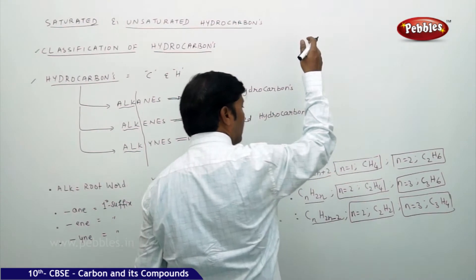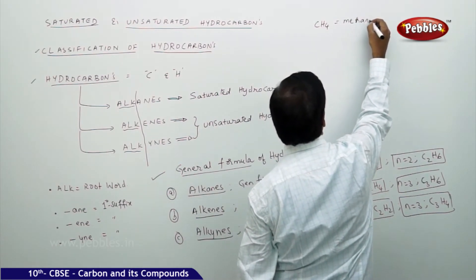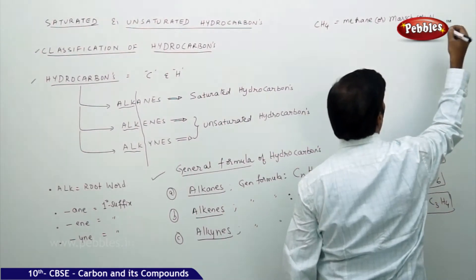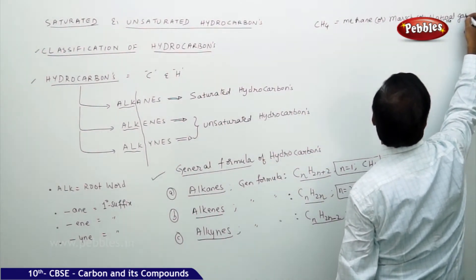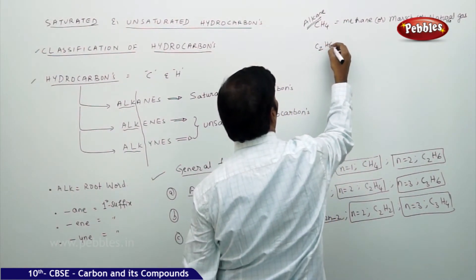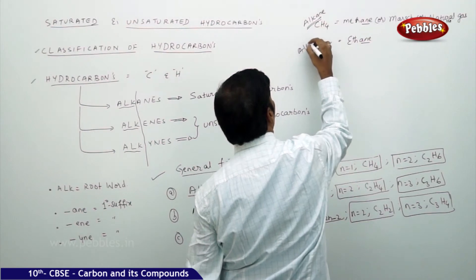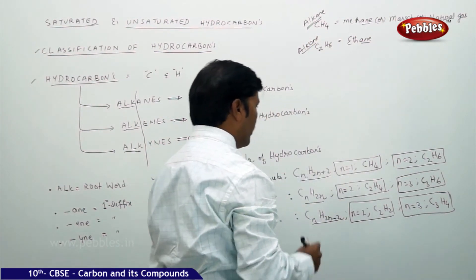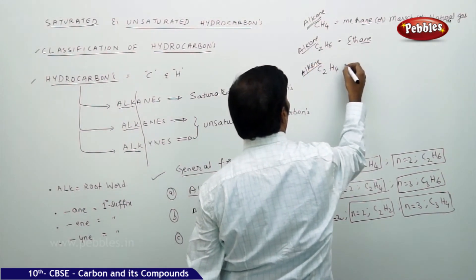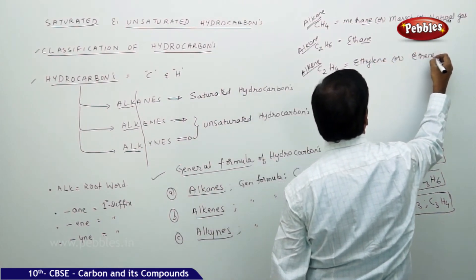CH₄ is methane, also called marsh gas or natural gas — it is an alkane. C₂H₆ is ethane, ending with '-ane', so it is also an alkane. C₂H₄ is an alkene called ethylene or ethene.